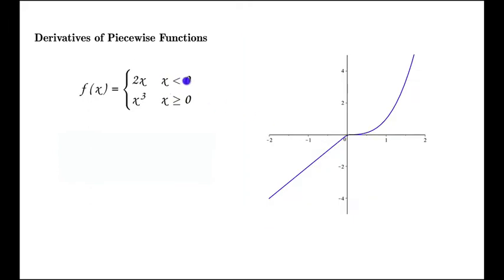Let's start by drawing its graph. For x less than 0, it's 2x. This is the graph of 2x. For x greater than or equal to 0, it's x cubed. This is the graph of x cubed.